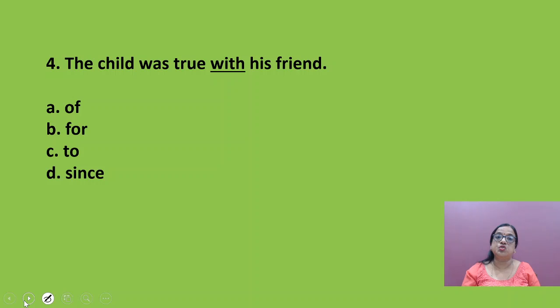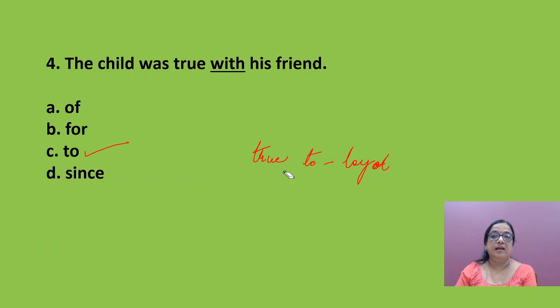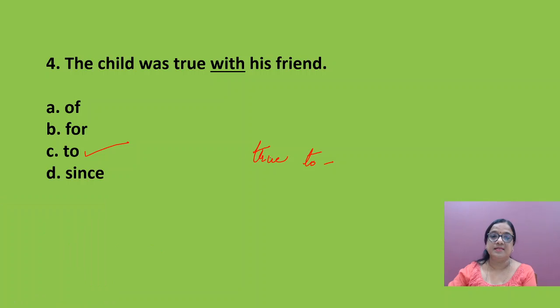The child was true with his friends. Now you have to give the correct answer for this underlined word. The child was true, it will be to his friends. When you use true to, true to means when a person is loyal. When a person is loyal, it is true to. So the child was true to his friends. Or you can say the subjects were true to the king, means loyal.